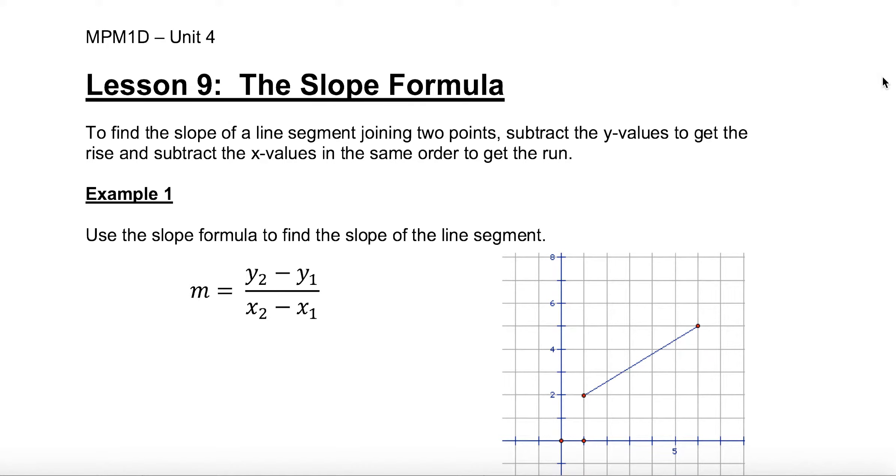Lesson nine is on the slope formula. To find the slope of a line segment joining two points, you can subtract the y values to get the rise and subtract the x values in the same order to get the run.